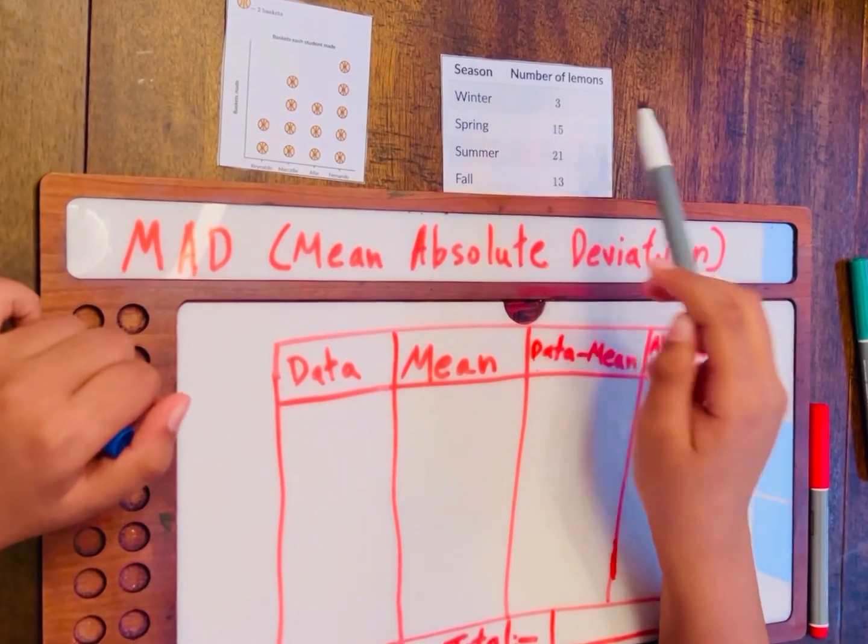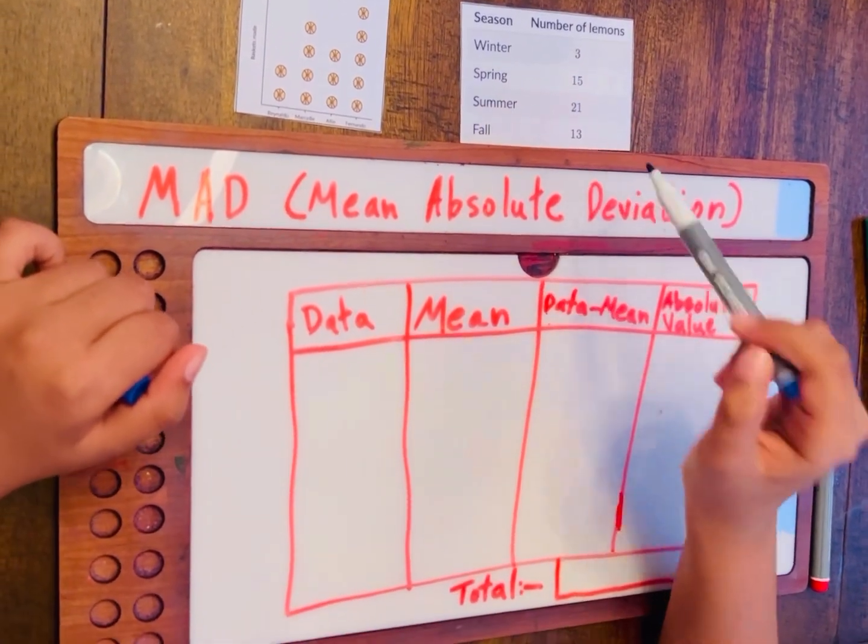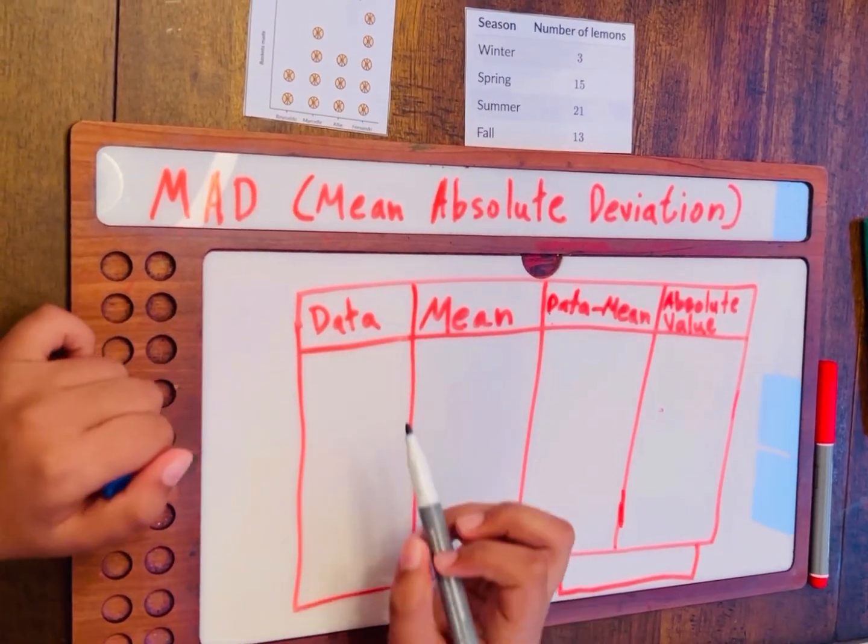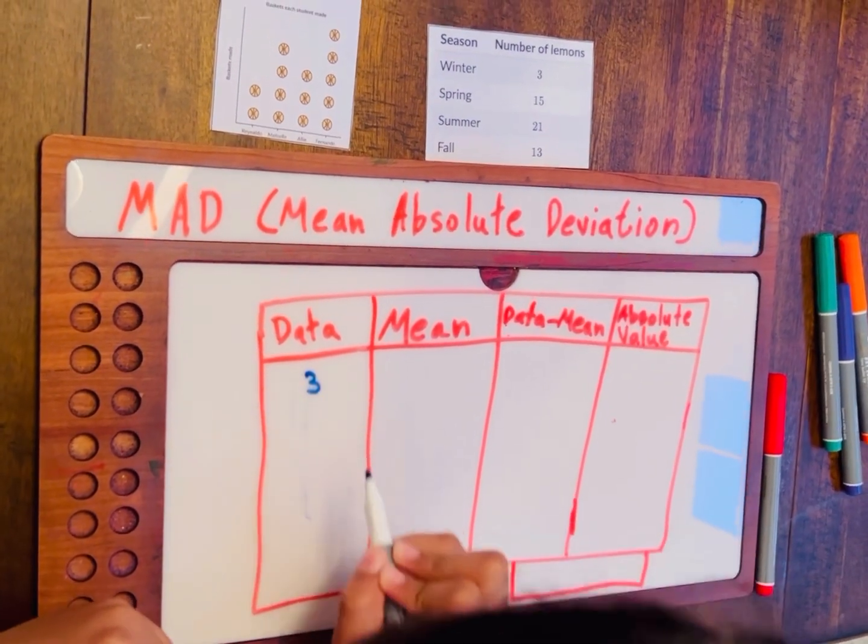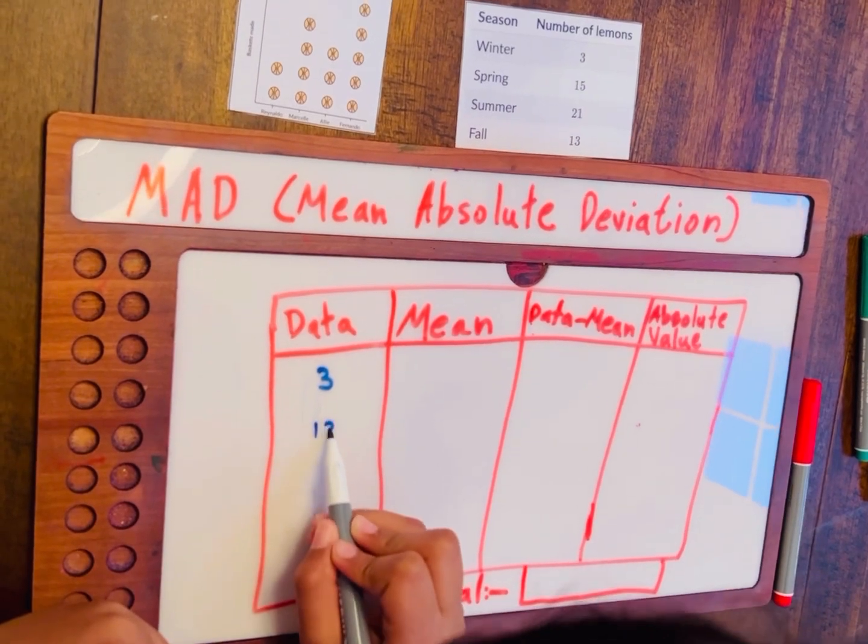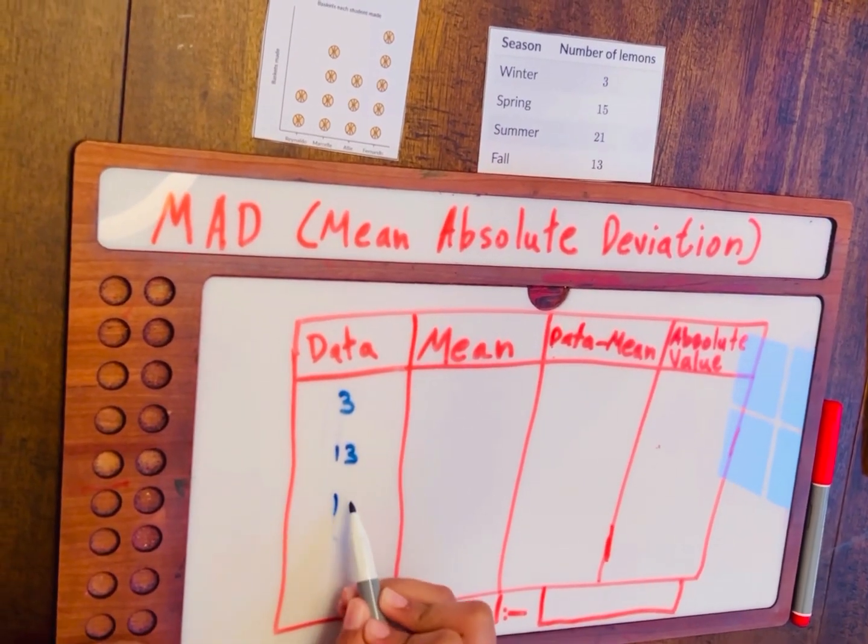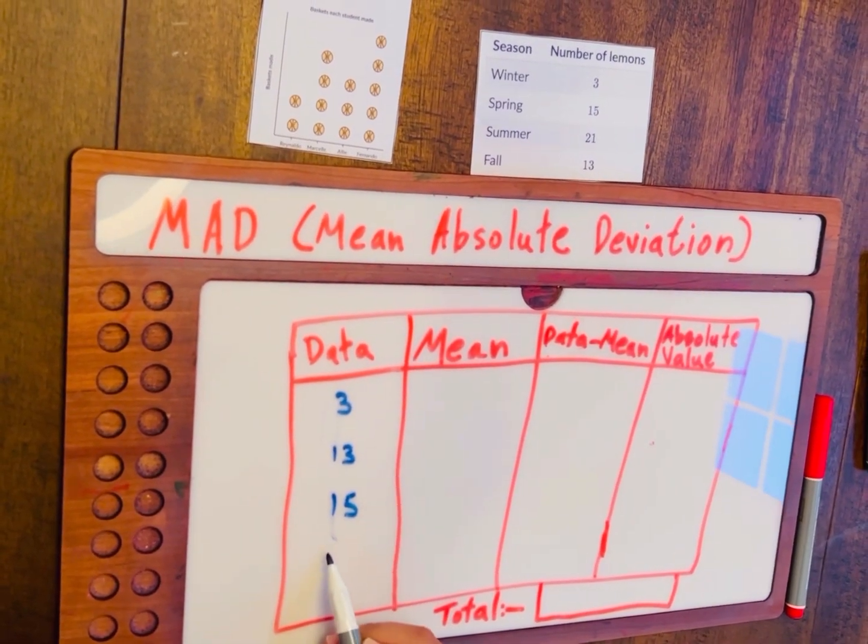Over here, in winter, it's 3, 15, 21, 13. So that's what we're writing in our data. And also, we want to put it in ascending order, so it's easier. So first is 3, then is 13, then is 15, and lastly, 21.